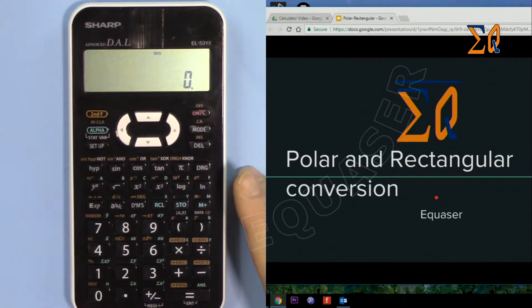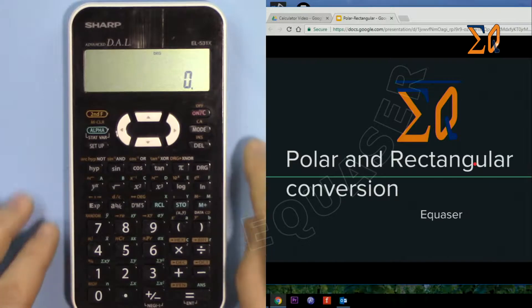Hi, welcome to Equator. In this video I'm going to show you how we can convert polar and rectangular, or sometimes called Cartesian, using the Sharp EL531X calculator.